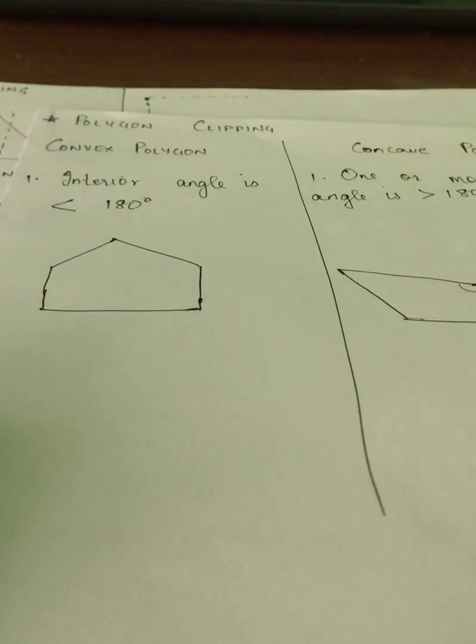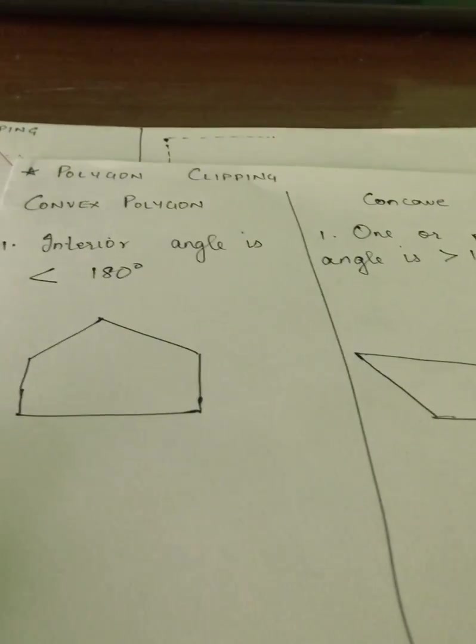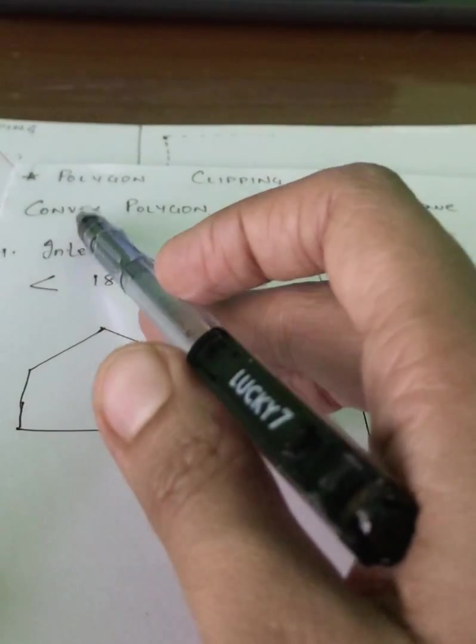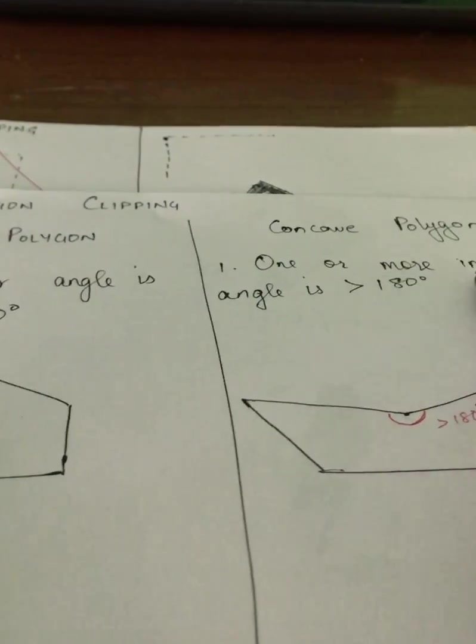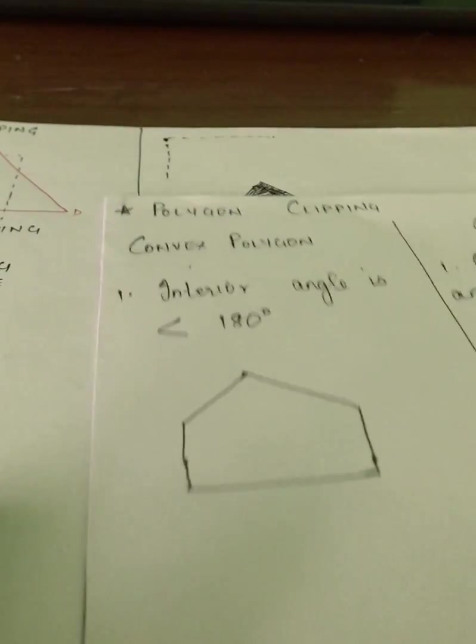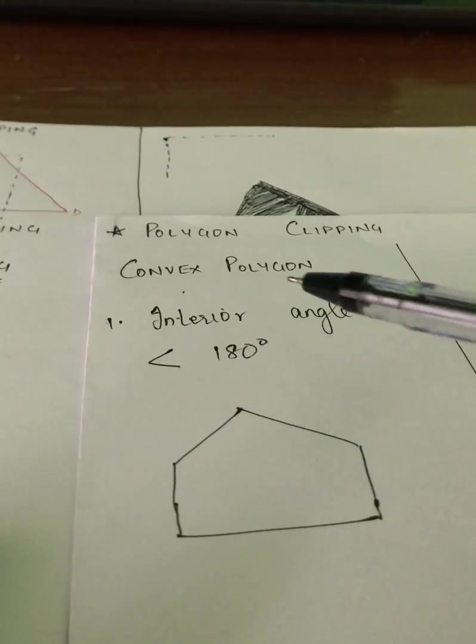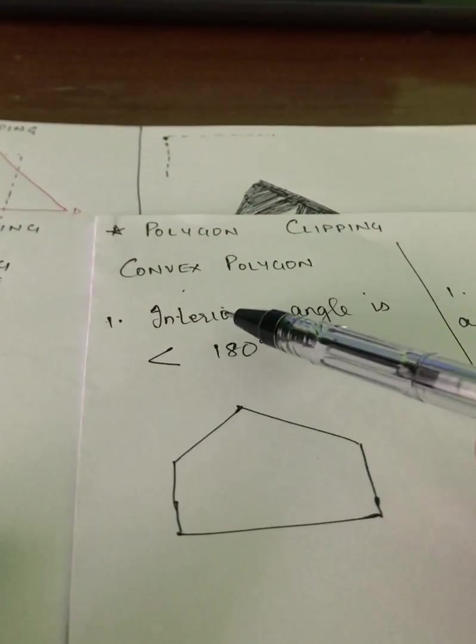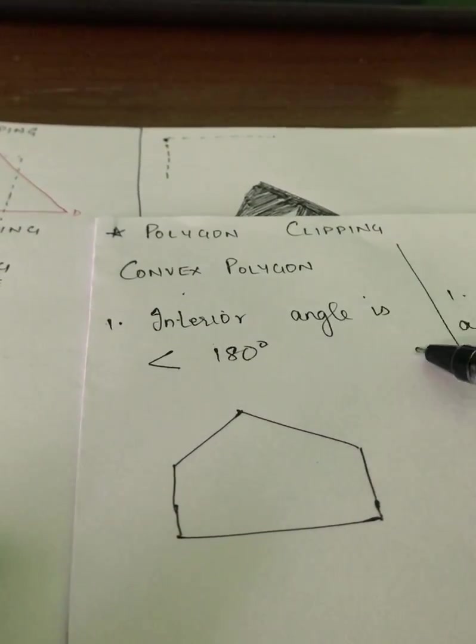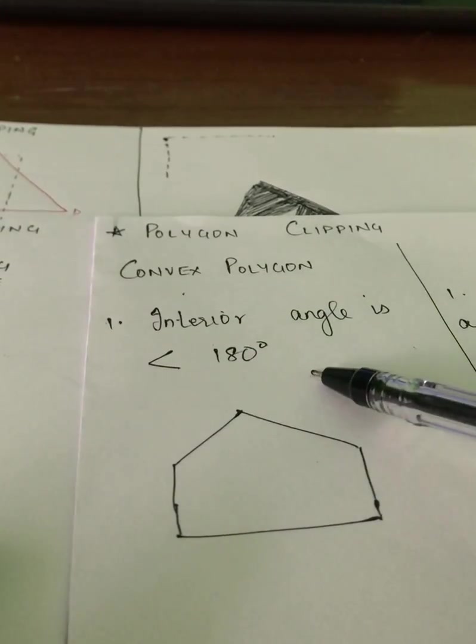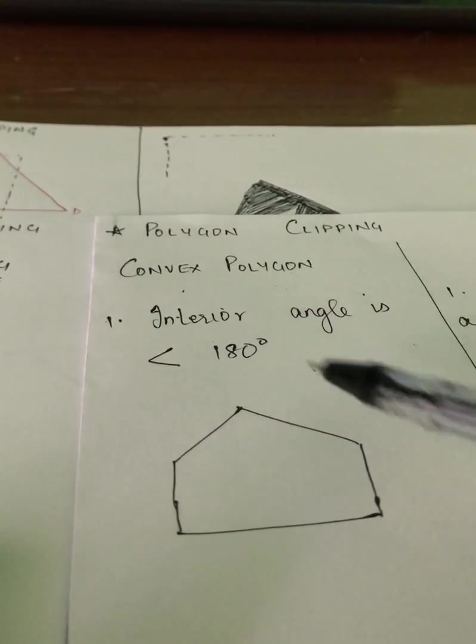Before we start with polygon clipping algorithms, this is the basic concept that I need you to understand: convex polygon and concave polygon. A convex polygon is a polygon which has all its interior angles as less than 180 degrees.